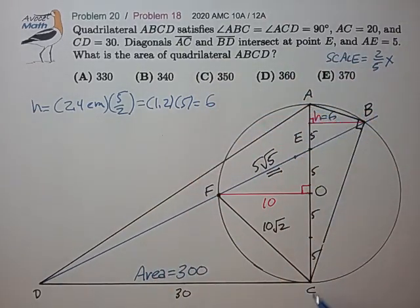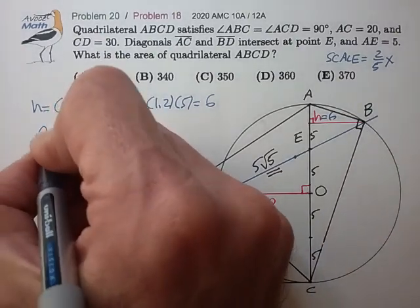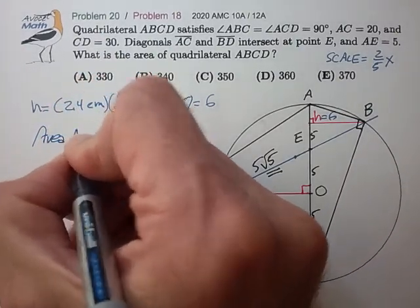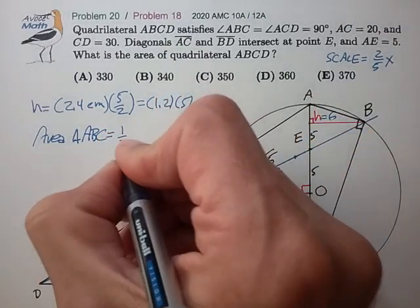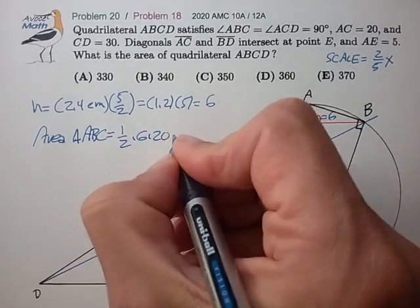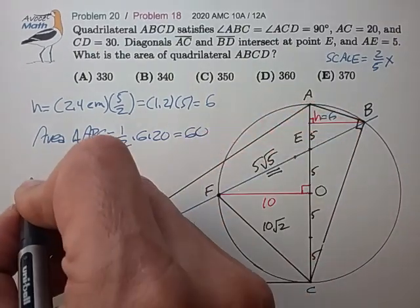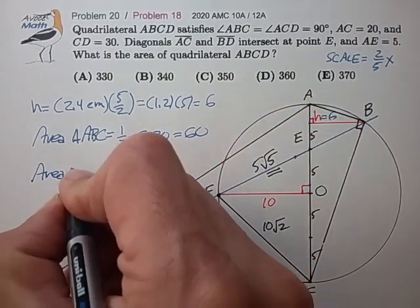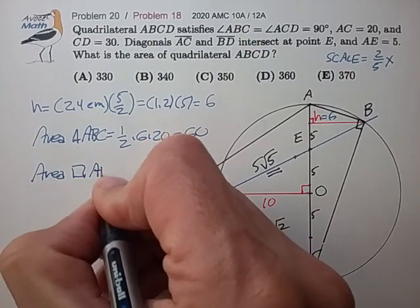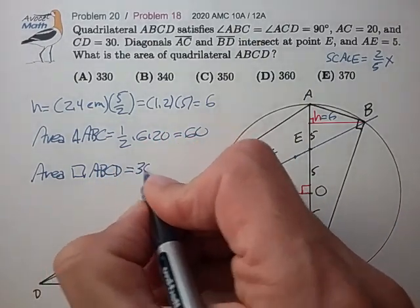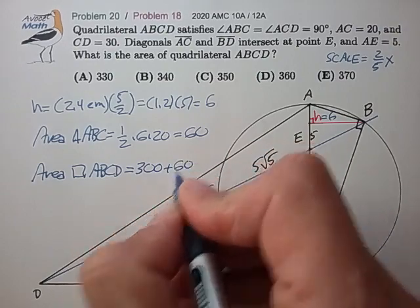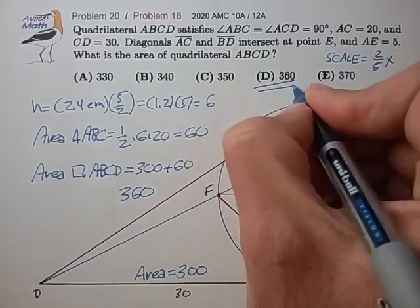And the area of triangle ABC then, pretty easy to calculate. Base of 20, altitude of 6, 60. So the area of the quad is just the sum of these two areas. 360 for choice D.